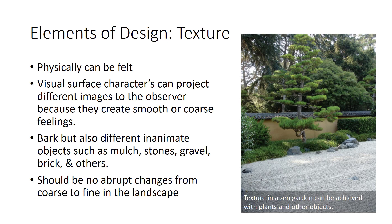Texture is another design element and refers to the visual and physical characteristics of a plant. The physical texture characteristics can be felt by the sense of touch, whereas the visual surface characteristics can project different images to the individual looking at the landscape, because such characteristics can create a very smooth or a coarse feeling. When seasons change, so do a variety of textures. For example, when a deciduous tree has leaves, the tree provides a smooth texture, but when the leaves fall off, the tree provides a coarse texture. The bark of trees also varies in texture, with some being very smooth and others being very coarse, such as oak, or the bark may have a peeling appearance, such as birch. Different textures can be incorporated into the landscape by using inanimate objects such as mulch, stones, gravel, brick, and others. The distance of the viewer from the landscape can visually modify how coarse an object appears — the greater the distance, the less coarse an object will appear. There should be no abrupt changes from coarse defined textures in a landscape.